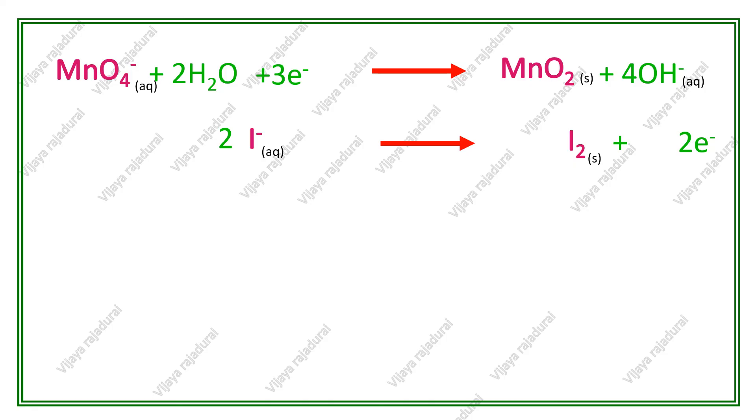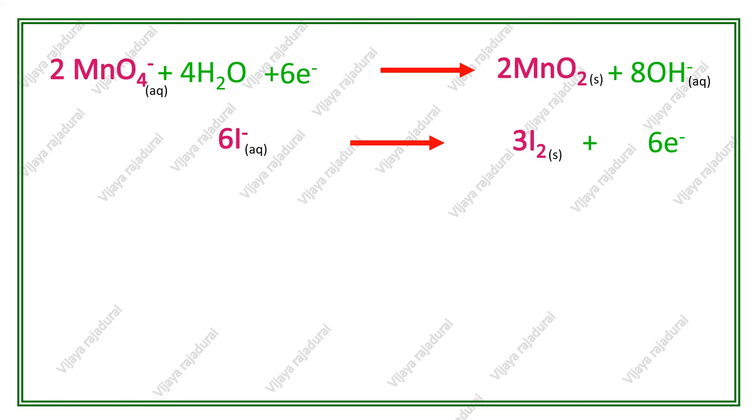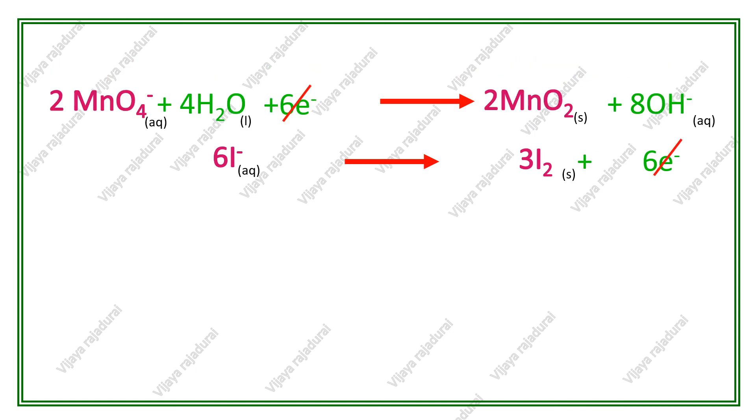Now, we have to check the number of electrons in both reduction and oxidation. In reduction reaction, 3 electrons are involved. So, we multiply the oxidation reaction by 3 to get equal number of electrons. Now the oxidation reaction will get 6 electrons. Again, we multiply the reduction reaction by 2 to get equal number of electrons. Now, the number of electrons are same. By cancelling the 6 electrons, we get the balanced equation.